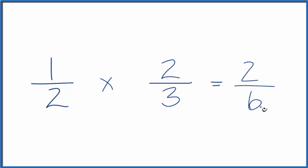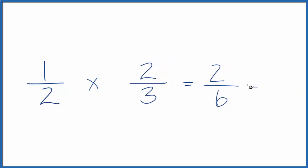And 2 over 6, we can simplify this. We can divide 2 into 2, that goes in there 1 time. And then 6 divided by 2, that goes in there 3 times.